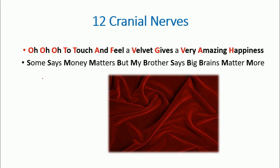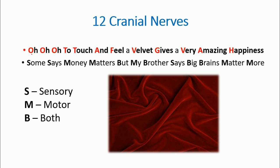The second sentence is: 'Some says money matters but my brother says big brains matter more.' Reading the first sentence gives you the names of all cranial nerves, and the second sentence tells you their type — S means sensory, M means motor, and B means both.